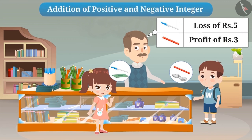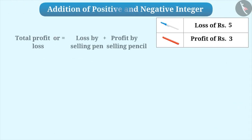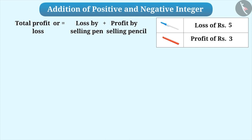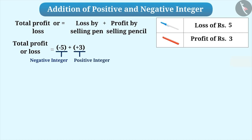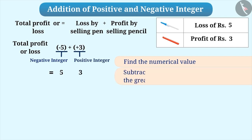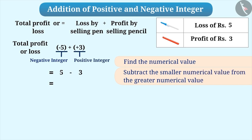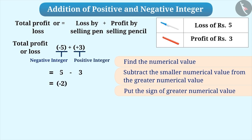Let us suppose a shopkeeper faces a loss of Rs.5 by selling a pen and a profit of Rs.3 by selling a pencil. Now, if we have to find out how much profit or loss the shopkeeper made, then we need to add them. This means total profit or loss is equal to -5 + +3. In such a situation, when one value is a positive integer and the other a negative, we find the numerical value of the integers ignoring their signs. Here, 5 is the numerical value of -5 and 3 is the numerical value of +3. Then we subtract the smaller numerical value from the greater numerical value. We get 2, and we prefix the sign of the greater numerical value with the result. Hence, the result of -5 + +3 will be -2. It shows that the shopkeeper faces a loss of Rs.2.